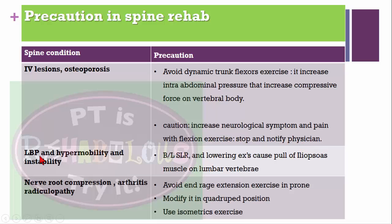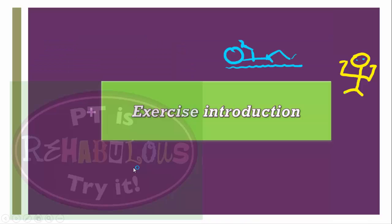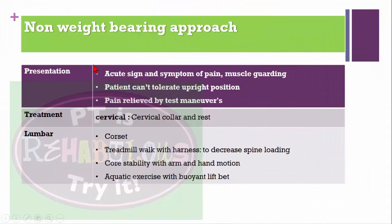For low back pain with hypermobility or instability, we need to avoid bilateral straight leg raising and lowering exercises, which cause a pull of the iliopsoas muscle on the lumbar vertebra and nerve compression. For arthritis and radiculopathy, we have to avoid end-range extension exercises in prone, modify into quadruped position, and use isometric exercises.